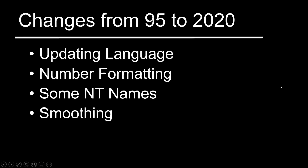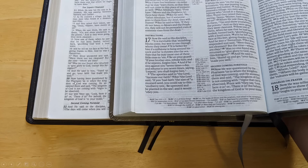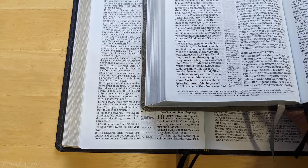Another change is the smoothing out of the language. One example: 'now having been questioned by the Pharisees' now reads 'now he was questioned by the Pharisees.' In John 9:18, 'the Jews then did not believe it of him' becomes 'the Jews then did not believe it about him.' The phrase 'did not believe it of him' is just not something anybody would say today — we'd say 'I didn't believe it about him.' It's still a bit of a wooden translation in my opinion, but it's definitely an improvement and reads more naturally.